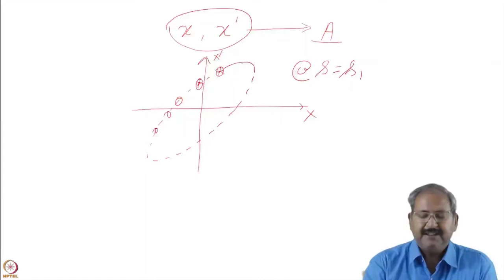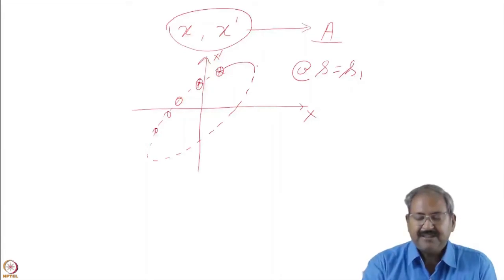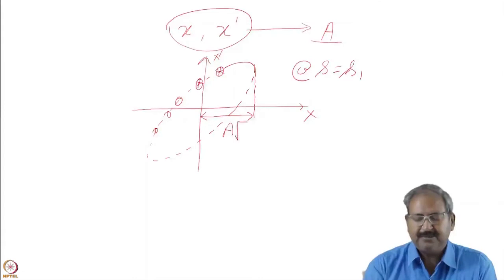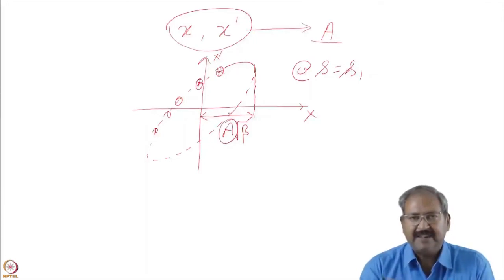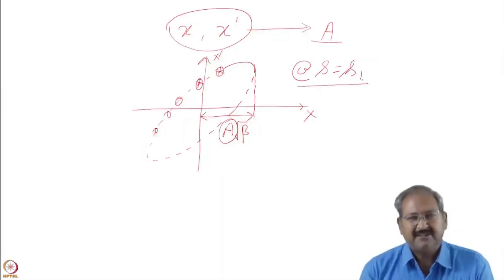As particles propagate through the optics, this ellipse may get rotated or elongated, but the area remains the same. The maximum distance from the design trajectory is a times root-beta. By knowing beta for a particular invariant of motion, we can find the maximum possible amplitude of betatron oscillation at a particular location. At another location, since beta is a function of s, the amplitude will also change.